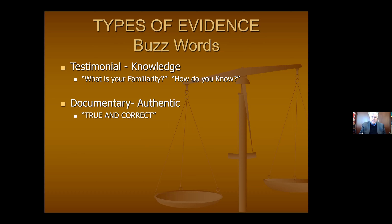The second type is documentary evidence — things like contracts, checks, or police reports. Here the key phrase is that this document is authentic — it is what it purports to be. Look at Evidence Rule 901 on authenticity, and also Evidence Rule 1001, the best evidence rule. That's where the phrase comes from: that this document is a 'true and correct copy' or a 'true and correct version of.' That's where the magic words 'true and correct' originate.